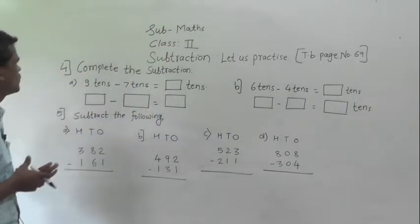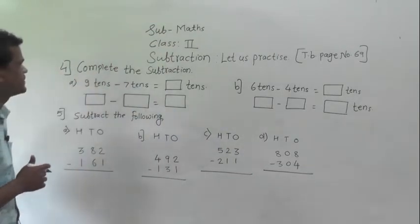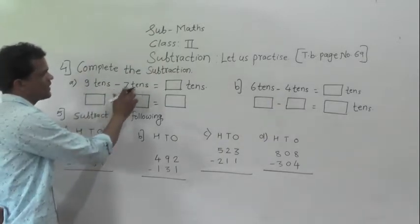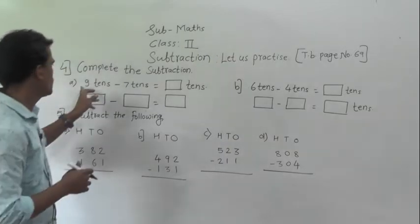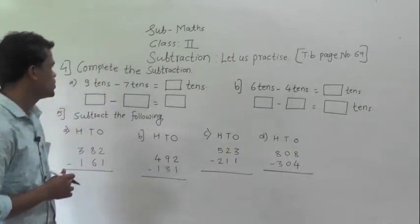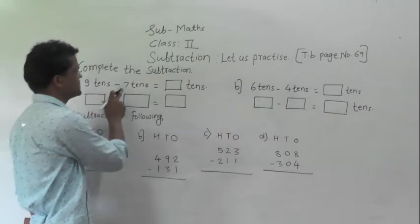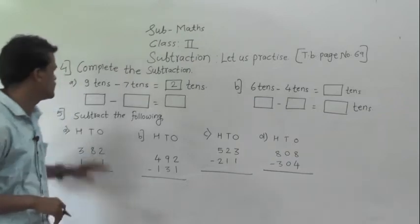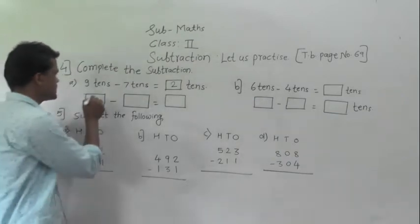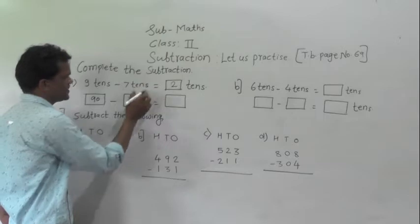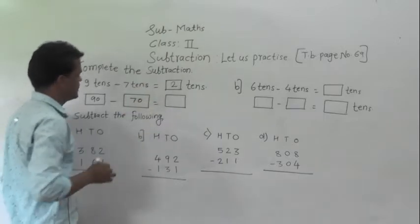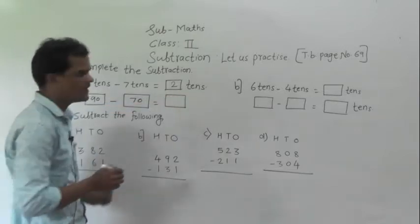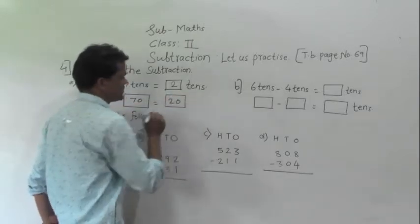Question number 4: complete the subtraction. Here 9 tens minus 7 tens is equal to blank tens. So 9 minus 7 is 2, so 9 tens minus 7 tens is equal to 2 tens. We know that 9 tens means 90 minus 7 tens means 70, so 90 minus 70 is equal to 2 tens, which means 20. So the answer is 20.